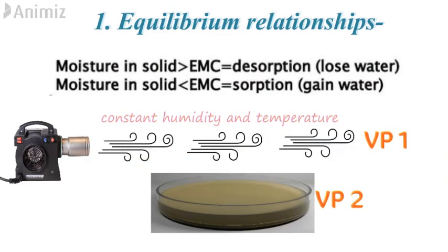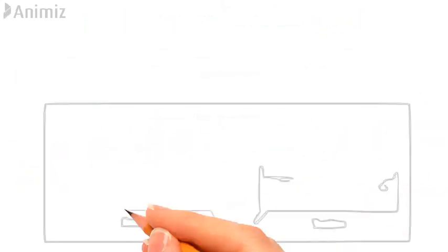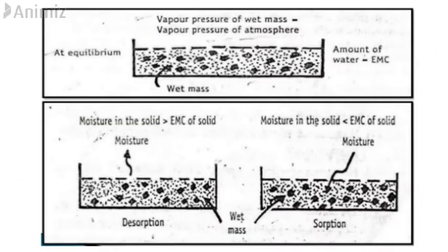If the moisture in the solid is more than the EMC, it will lose water to the surroundings, which is called desorption. If the moisture content of the solid is less than the EMC, it will gain water from the surroundings, which is called adsorption. This theory is summarized in a diagram: at equilibrium the vapour pressure of the wet mass equals that of the atmosphere and the amount of water is the EMC; above EMC the solid undergoes desorption, and below EMC the solid undergoes adsorption.